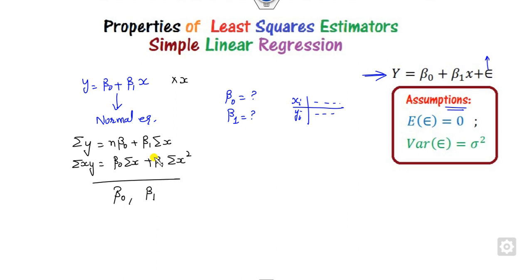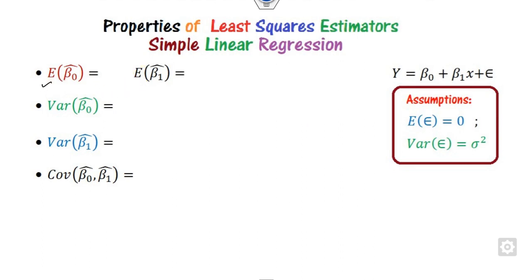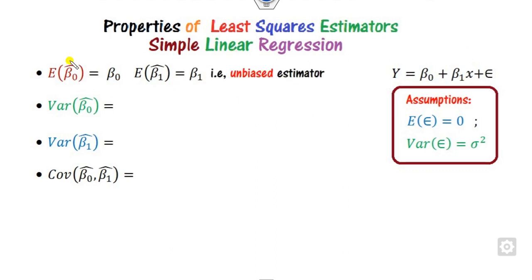The next question is: what distribution do the estimators follow? If they follow the normal distribution, what will be the mean and variance of beta-naught and beta-1? Once you solve the normal equations and obtain the estimators, you can confirm that beta-naught and beta-1 estimators are unbiased.